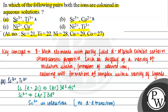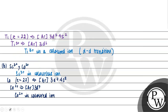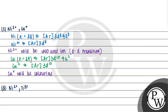So option C is also eliminated. Now let us look at the last option D: Ni²⁺ and Ti³⁺. We have seen that Ni²⁺ is a colored ion due to d-d transition, with outer electronic configuration 3d⁸.